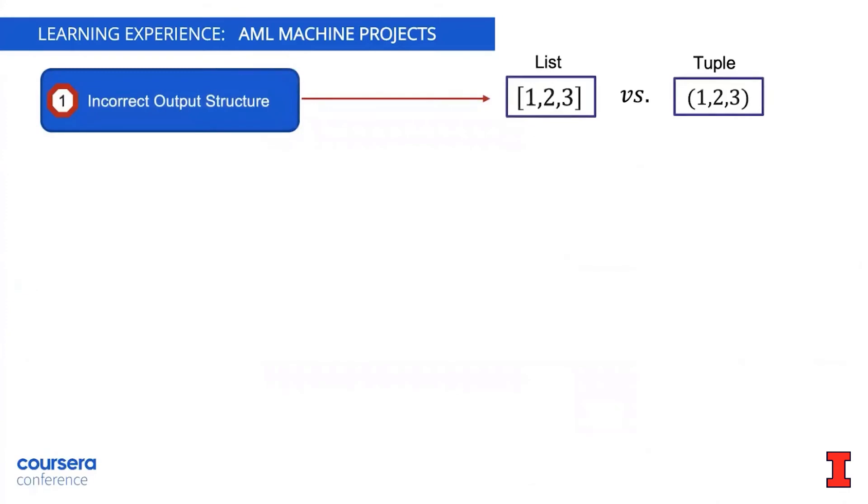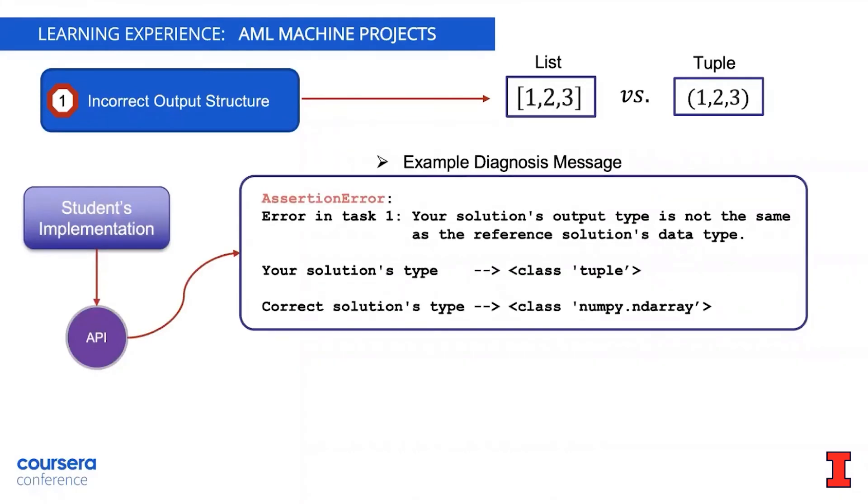Now let's take a look at the first one and how our own API helps the students identify the problem. So let's say that we have a student's implementation that produces the wrong kind of output data structure. This is an example of the diagnosis message that our API produces and tells the students about. For example, as you can see, it tells the student that they're producing a tuple output. However, the reference solution is actually a NumPy array. And the message is very clear.